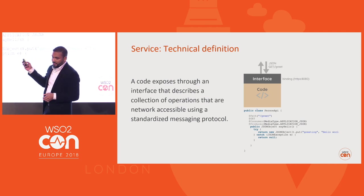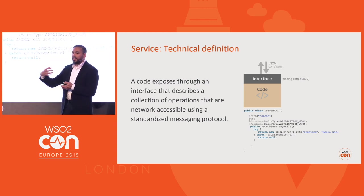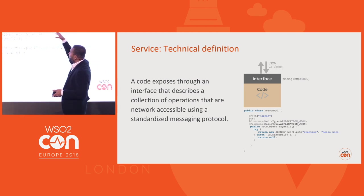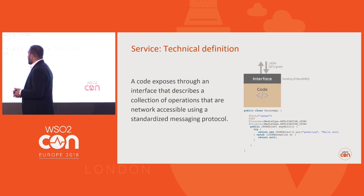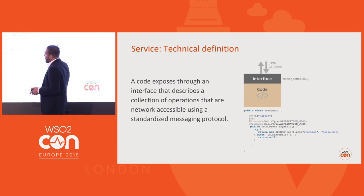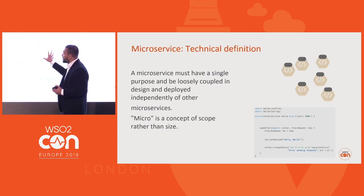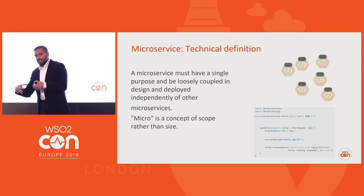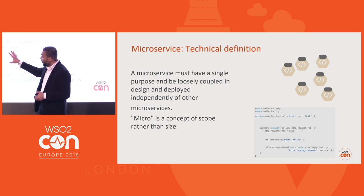If you look at this service, for most of us a service is just a set of code with some kind of network-accessible interface — a binding, a protocol like HTTP, JMS, MQTT, and a message format like JSON or XML. You write code, annotate it, and make it a service. That's the technical definition. It's not different for microservices — it's the same concept, but you divide the monolithic service into a smaller set of services based on scope. A lot of people think it's about size, but it's the scope.